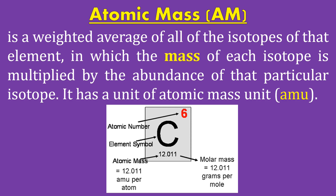Using the atomic number and the relative abundance of these isotopes, carbon will have 12.011 atomic mass units per atom.